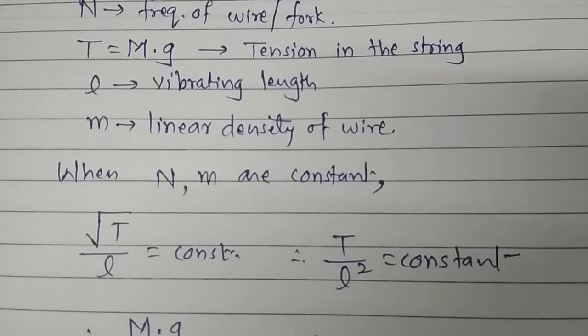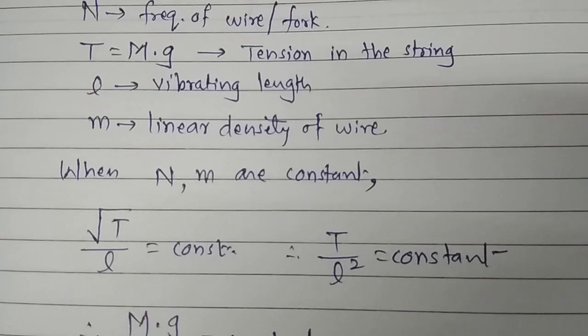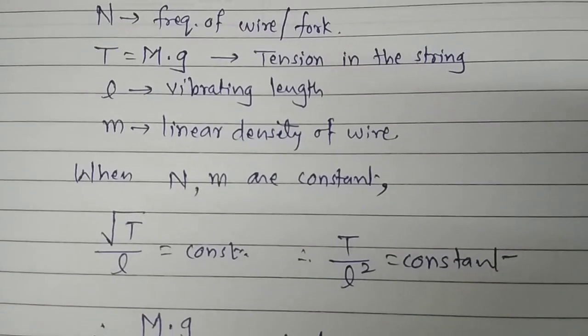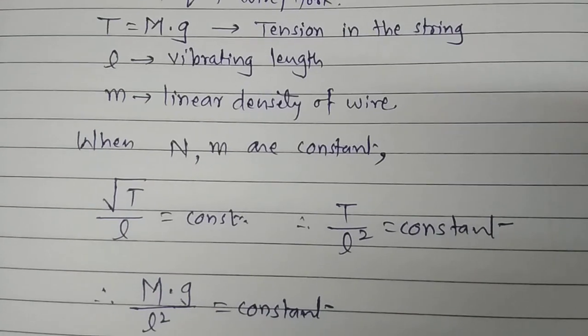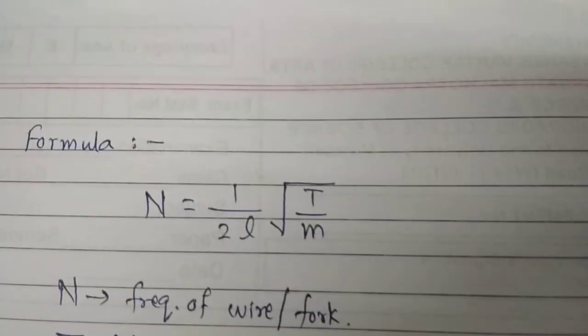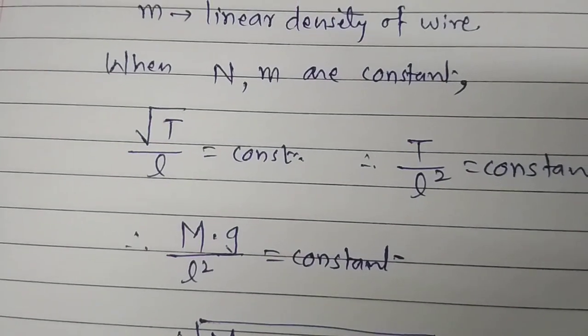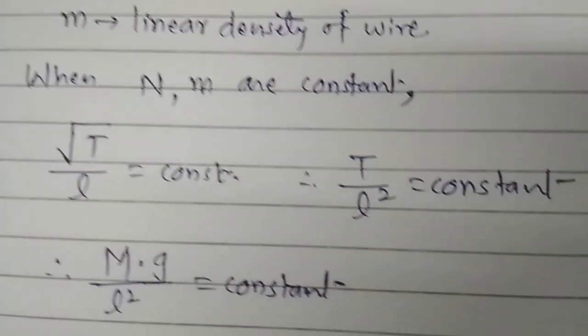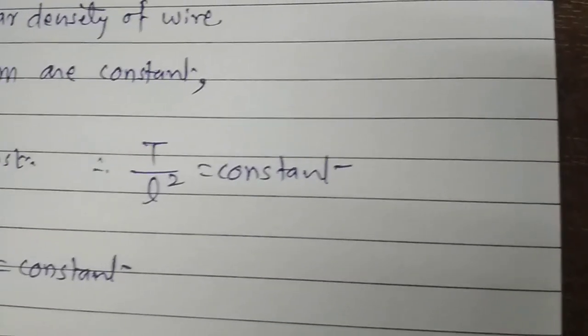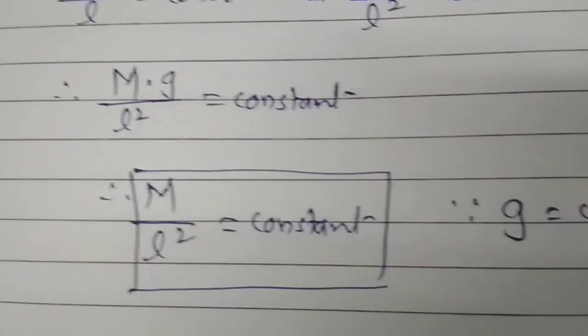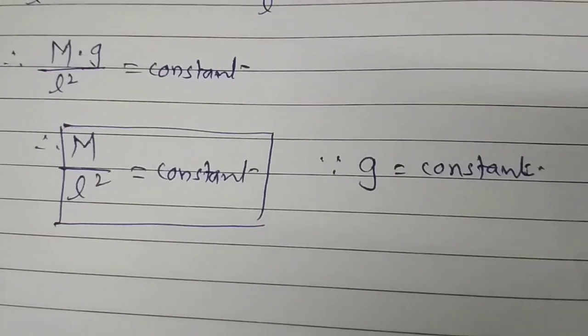In this experiment we will not change the frequency n, and the wire is also not changed, so the mass per unit length m remains constant. When these two quantities remain constant in the formula, we can see that root T divided by L must equal a constant. Squaring both sides gives T by L squared equals constant, where T itself equals M into g, and since g is constant, M by L squared equals constant. So we have to verify that M upon L squared remains constant throughout this experiment.